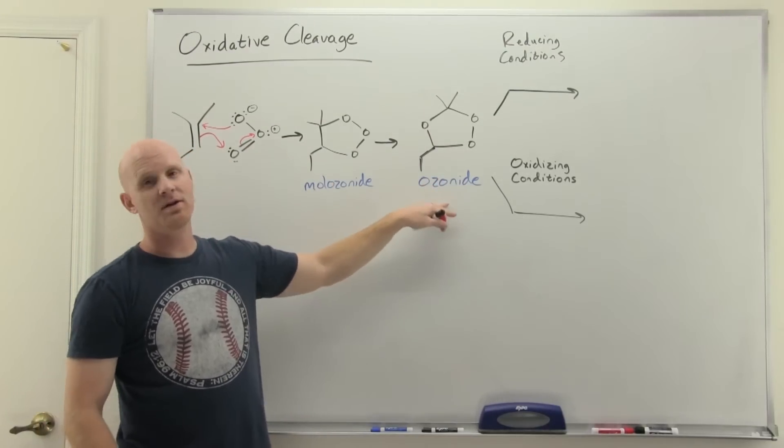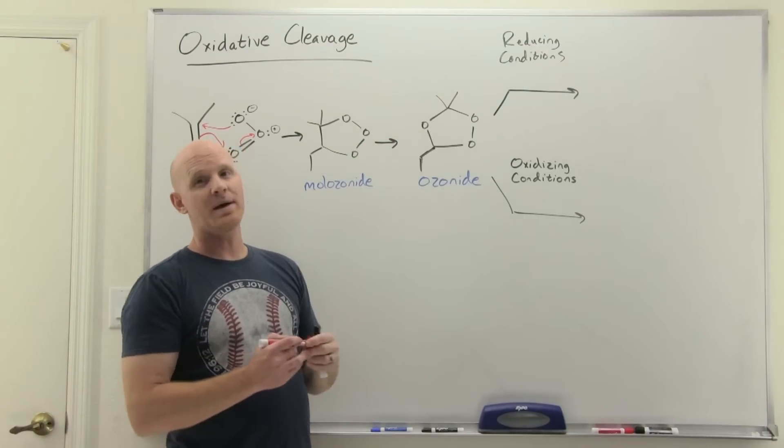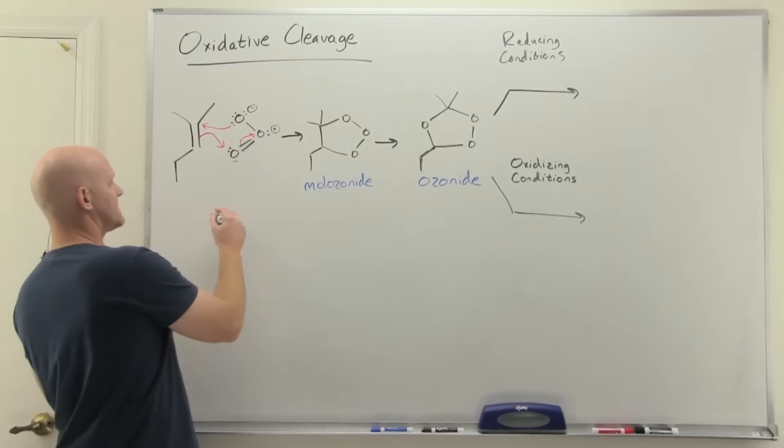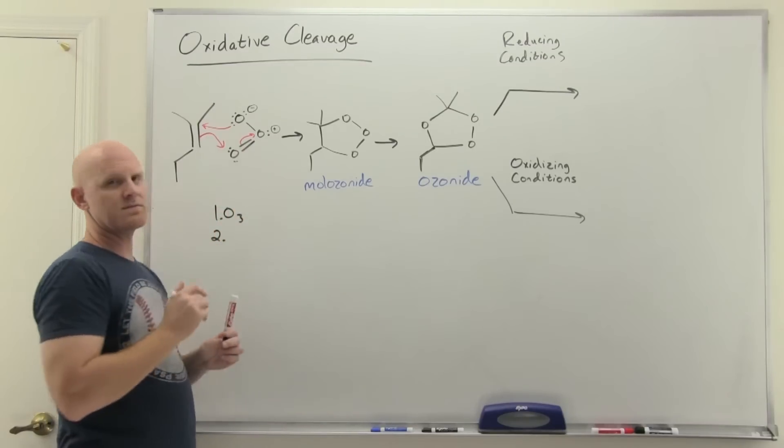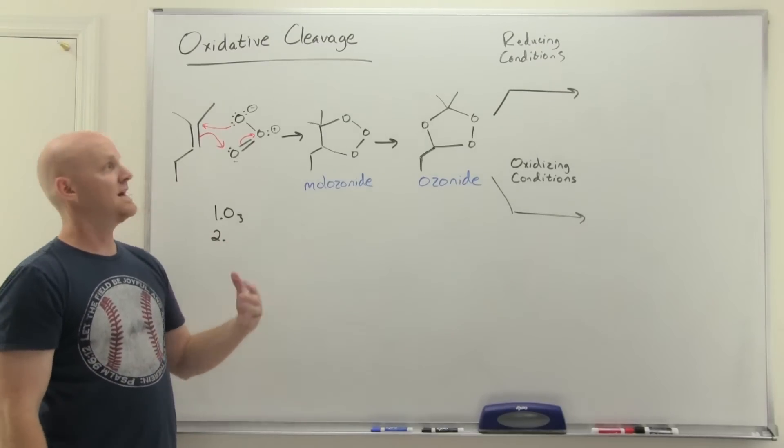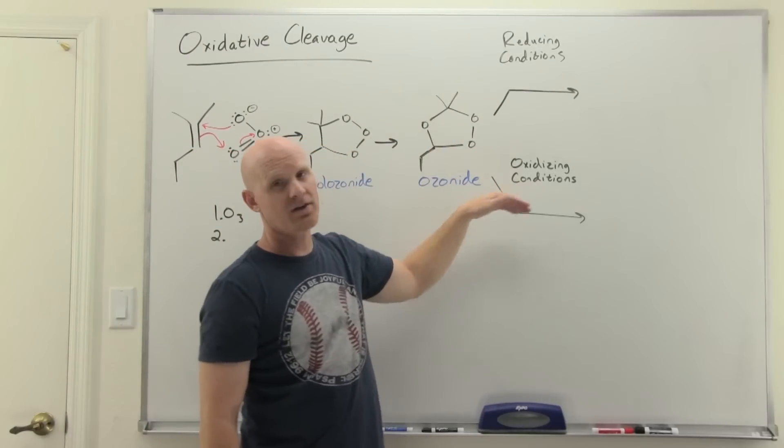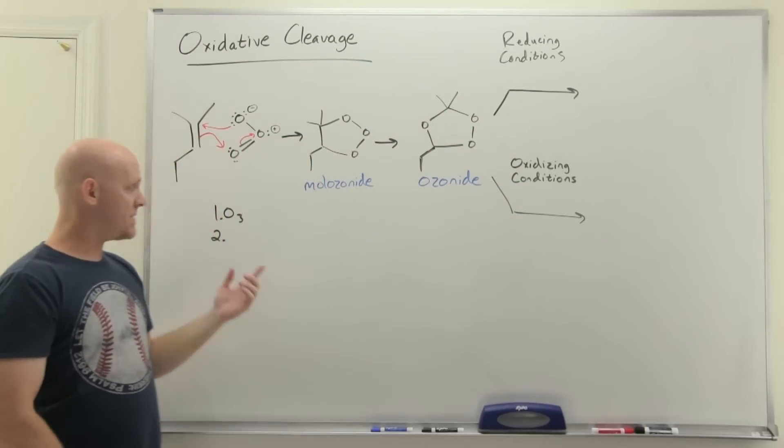It's this ozonide that's going to undergo step two. Typically for ozonolysis you've got step one which is ozone, and then step two you've got some variability. You might add a reducing agent or an oxidizing agent, so we have two different sets of conditions for ozonolysis: reducing conditions and oxidizing conditions.